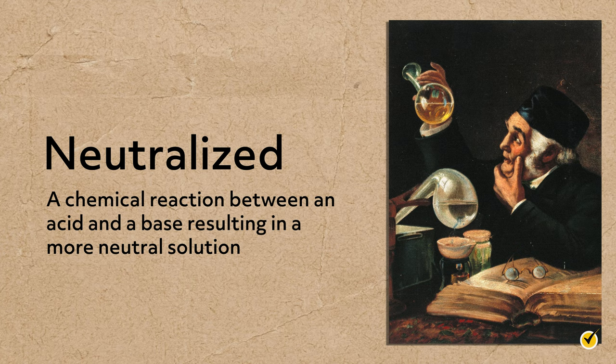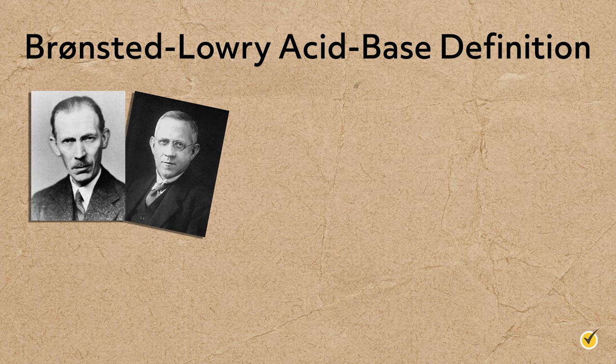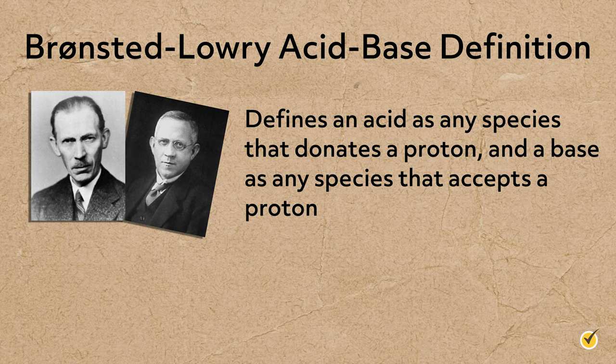While these early definitions still apply to many acids and bases, we now have the Bronsted-Lowry acid-base definition — a broader description based on their molecular structure. Bronsted-Lowry defines an acid as any species that donates a proton, and a base as any species that accepts a proton. Following this definition, chemists can assess the strength of acids and bases on how likely they were to give or receive a proton, which does a much better job of explaining the phenomena of all acids and bases.